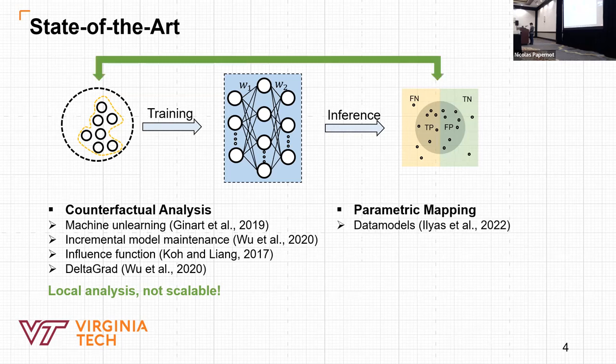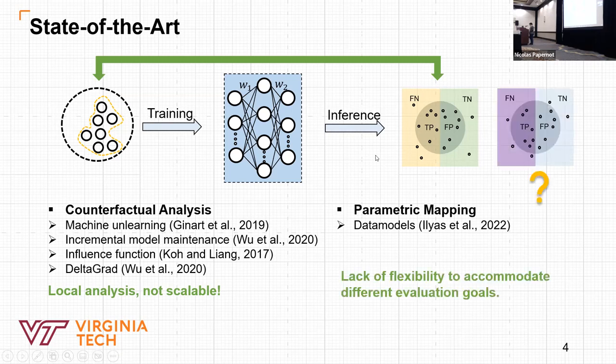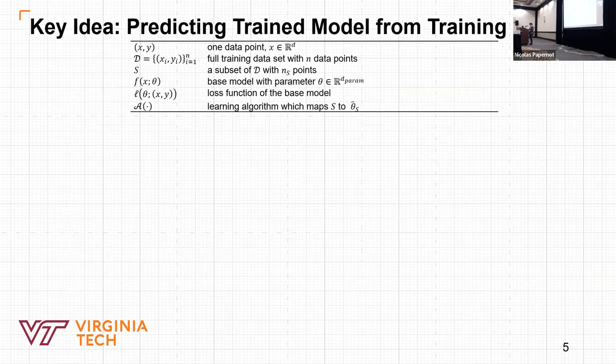Another branch is to find the parametric mapping from the training data to the model output by supervised learning. The recent work DataModels is proposed to use linear function to directly learn the model prediction from the training data. However, the selection of this prediction target lacks the common flexibility to accommodate different evaluation goals. So we will elaborate more about the limitations.